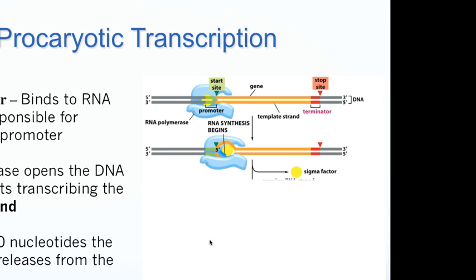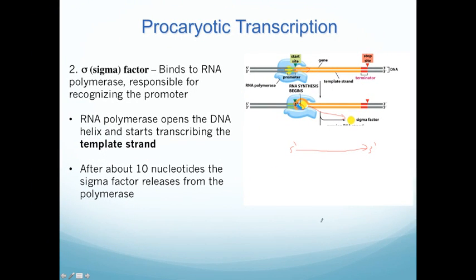To help that process, in bacteria only, there is something called the sigma factor. The sigma factor is responsible for binding to the promoter region and to the RNA polymerase, and it helps the RNA polymerase recognize the bacterial promoter sites — the sites that are minus 10 and minus 35 nucleotides from the start site. The sigma factor and RNA polymerase together recognize the promoter and initiate transcription. About 10 nucleotides after a little bit of RNA is made, the sigma factor is released and the RNA polymerase goes on to make messenger RNA by itself.